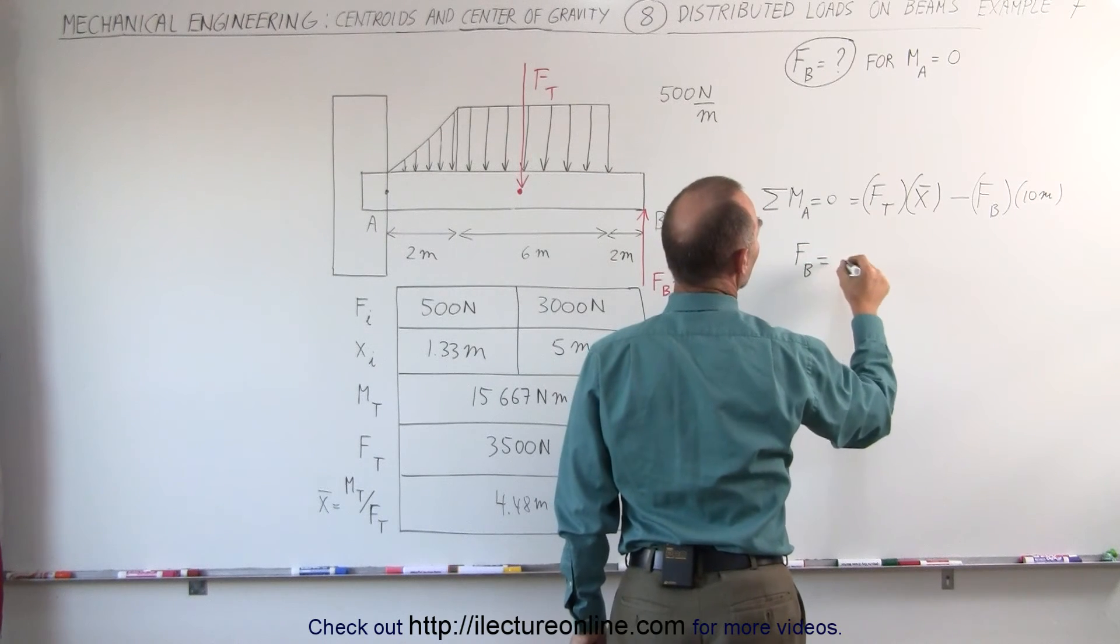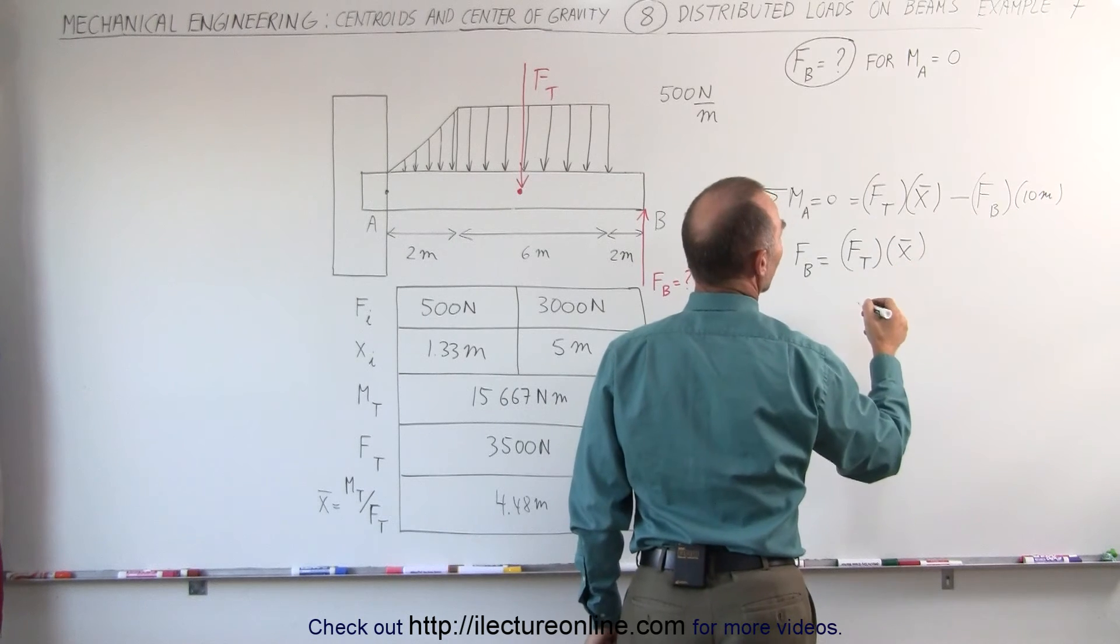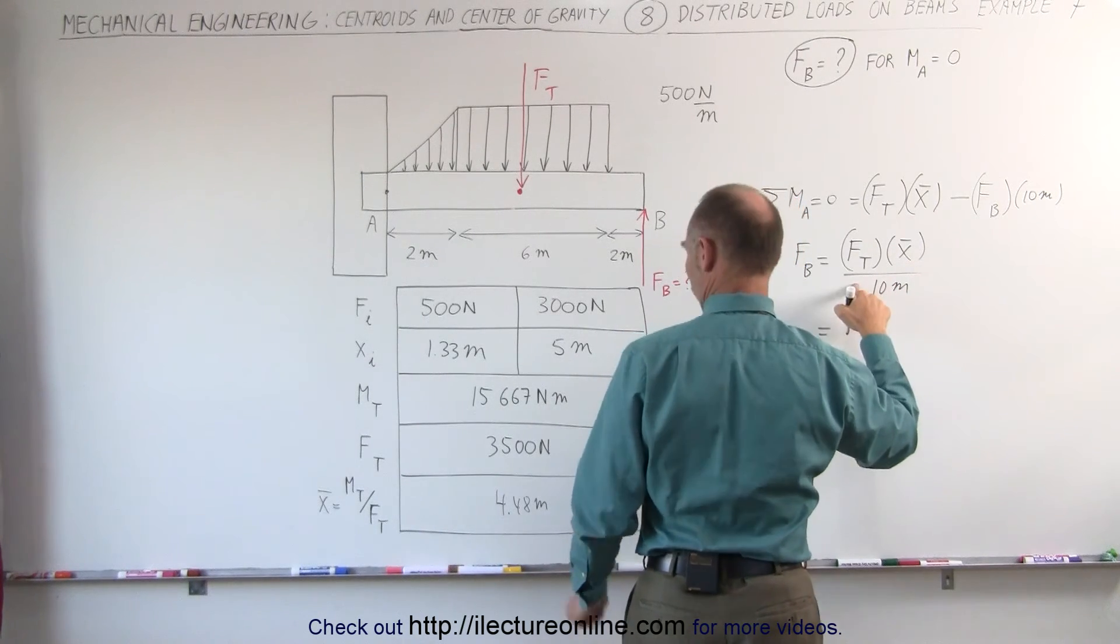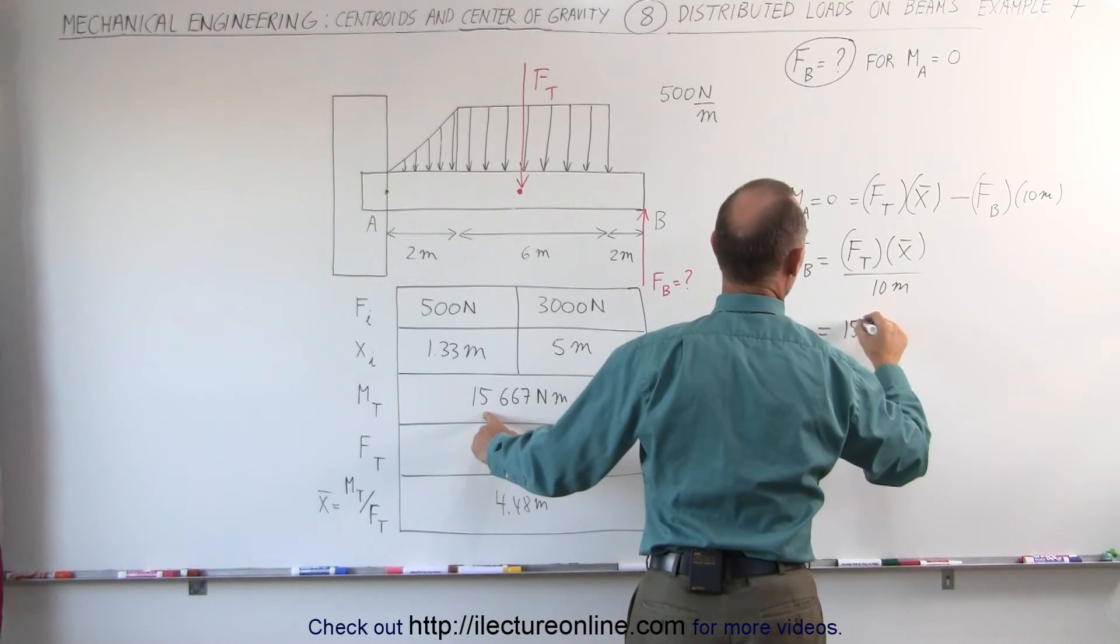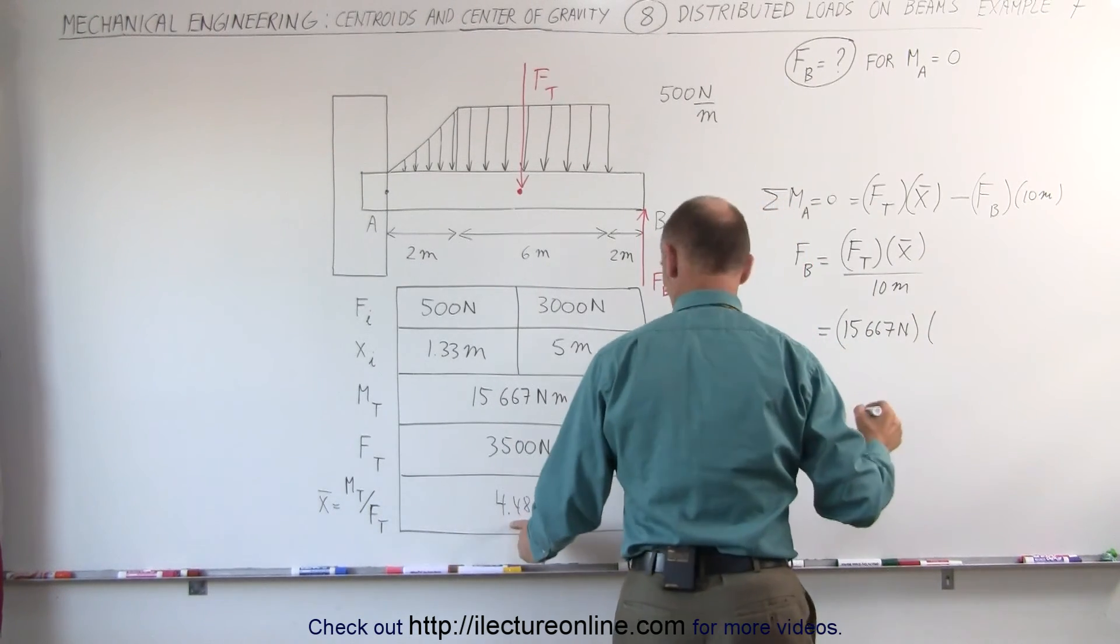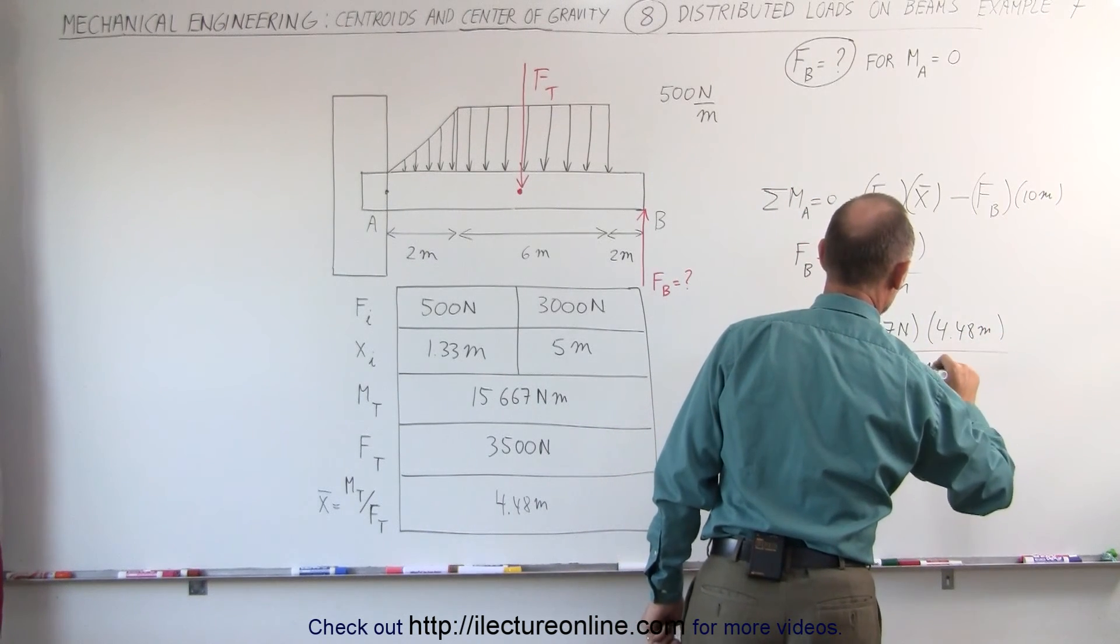Force at B is equal to the total force times the x-coordinate of the centroid divided by 10 meters. The total force, 15,667 Newtons. The x-coordinate, 4.48 meters, divided by the total length of the beam, 10 meters.